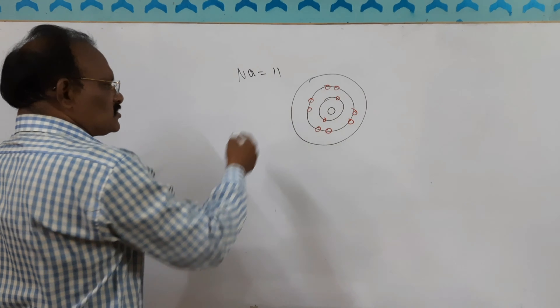Now the concept is how to find out the valency. For every element to be stable, it requires a complete octet in the outermost shell. For sodium, the outermost shell is the third shell with only 1 electron, but it needs 8 electrons for stability. So it requires 7 more electrons.